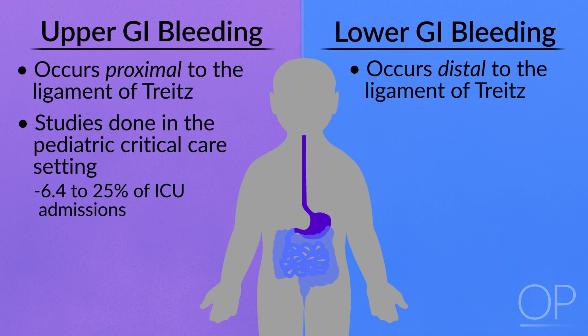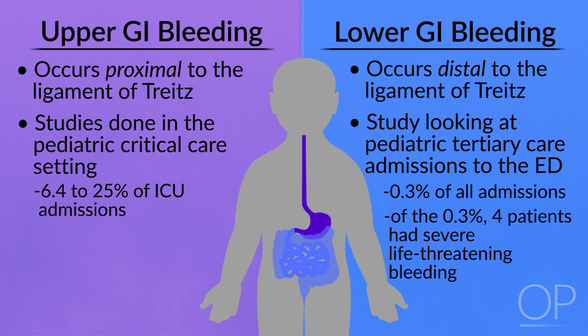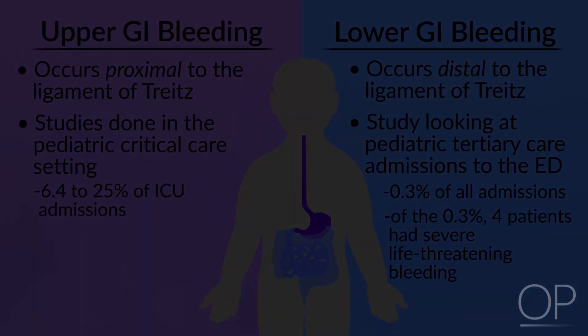For lower GI bleeding, a study looking at pediatric tertiary care admissions to the emergency department showed that lower GI bleeding occurred in 0.3% of all admissions. Of those 0.3% of admissions, four patients had severe life-threatening GI bleeding.